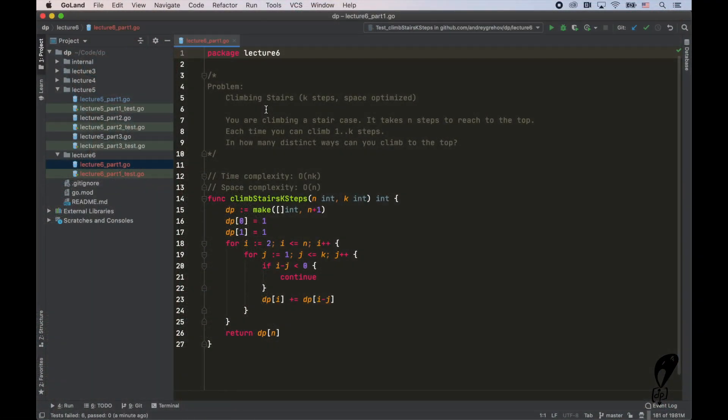All right, so I've got the climbing stairs problem here, the K steps version. We want to optimize the space complexity from O of N down to O of K. It means we no longer going to allocate memory for N elements, but instead we will allocate memory for K elements. And that's exactly what I'm going to do. So previously we had this DP array of size N plus one. Now we can just allocate memory for K elements.